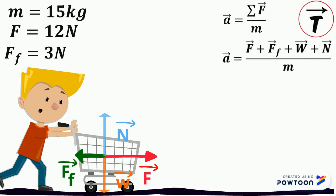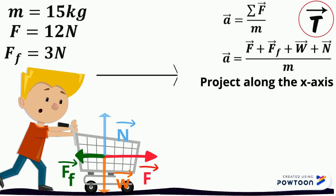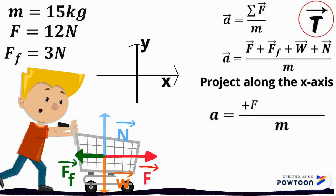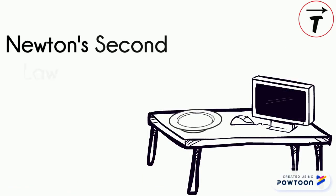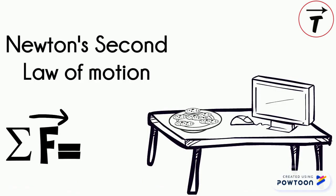The sum of forces is the applied force F, the force of friction, plus W plus N. Since the motion of the cart is along the horizontal line, we project along the x-axis, taking the positive x-axis to the right. The projection of the applied force is +F because it is with the direction of motion, and the projection of the friction force is −Ff because it is opposite to the direction of motion. Both the weight and the normal reaction have zero projection on the x-axis because they are along the y-axis. So a equals F minus Ff plus zero plus zero, divided by m. Substituting the values, the acceleration of the cart is 0.6 meters per second squared. In this video, we learned Newton's second law of motion: sum of forces equals mass times acceleration.